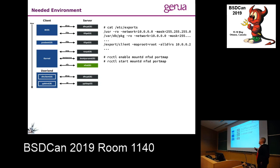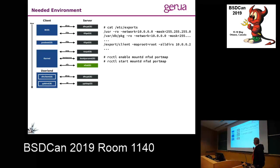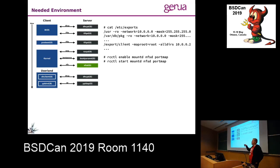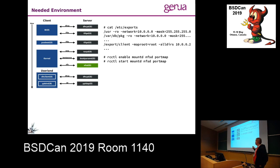To get NFS running on the server, you need three daemons. Name them and start them. Before that, configure the exports file, which defines which directories the server exports over NFS. One obvious thing: export /usr read-only, and also export /var/db/pkg read-only. This is useful if you want to use pkg_info on the clients. I use this a lot — I can look up packages on my workstation to see if they're available to install.